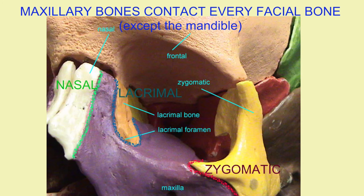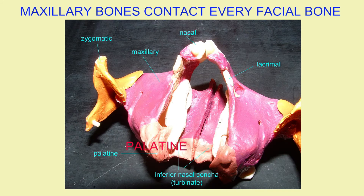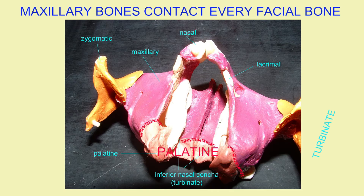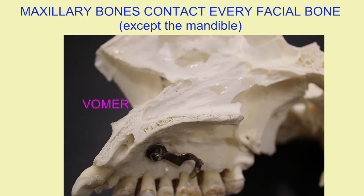Here you can see them contacting the nasal bone, the lacrimal bone, the zygomatic bone, the palatine bone, the turbinate, and the vomer.